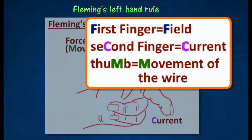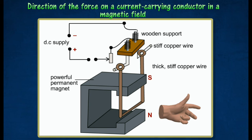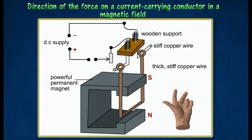The summary below aids in memorizing the rule. The following example shows how Fleming's left-hand rule is used to predict the direction of the force that acts on a current-carrying conductor in a magnetic field. By arranging your left hand as shown in the image, the first finger points in the direction of the magnetic field from north to south. The hand is then rotated until the second finger points in the direction of the current from positive to negative. The thumb then points in the direction of the movement of the wire.